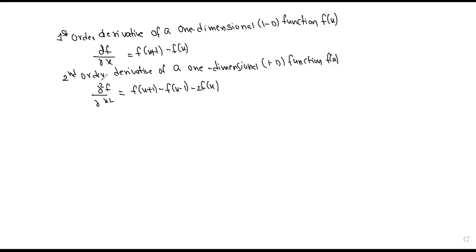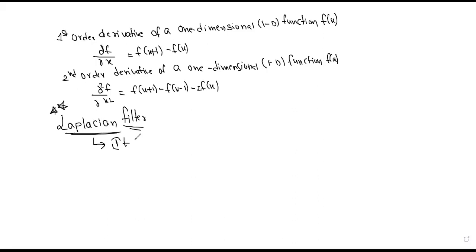For sharpening of spatial differentiation, the image sharpening uses a filter called the Laplacian filter. The Laplacian is a linear filter used for sharpening. If you use the Laplacian filter, it highlights gray level discontinuities in the image.